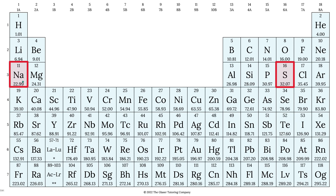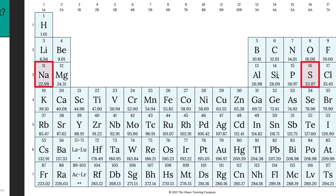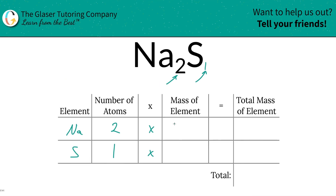We're going to take those number of atoms and multiply it by the mass of each particular element. We need the periodic table for that. So sodium is 22.99, sulfur is 32.07. So that's what we're going to write down — 22.99 for sodium, 32.07 for sulfur.